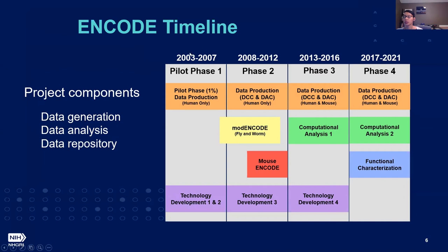This was 2003 to 2007. This resulted in a second phase where this second phase transitioned into full-scale data production. It also was an introduction to the development of a data coordinating center responsible for tracking, storing, and displaying these data, and the data analysis center responsible for integrative analyses.